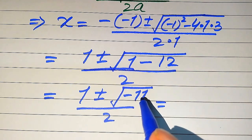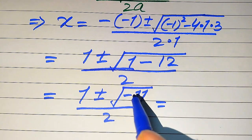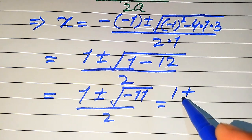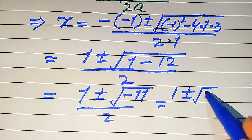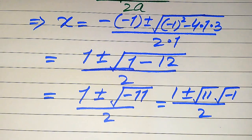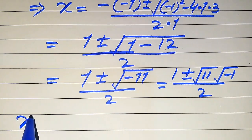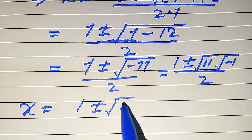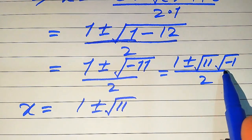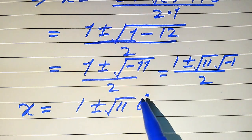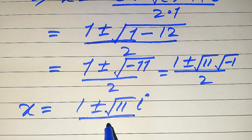We separate the square root of minus 11 into its components. It becomes 1 plus or minus square root of 11 times square root of minus 1, divided by 2. Since square root of minus 1 equals iota, we get X equals 1 plus or minus square root of 11 times iota, divided by 2.